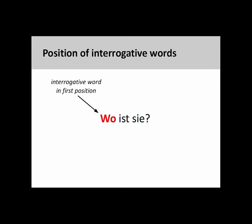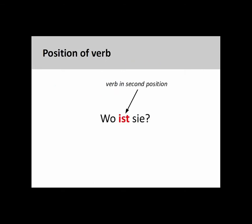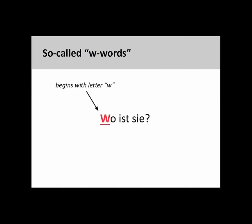Here the interrogative adverb 'wo' (where) sets up a question inquiring about the location of the subject. The verb will come in the second position in sentences beginning with an interrogative word. We will see in a later presentation that the verb comes in the first position in yes-no questions. As is the case with most English interrogative words, it is useful to note that German interrogative words begin with the letter W. For this reason, they are often called W-words — in German, W-Wörter.